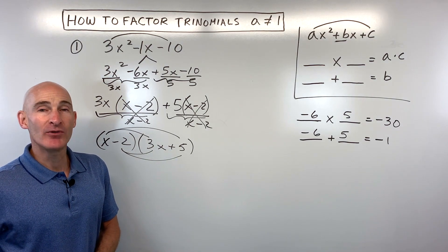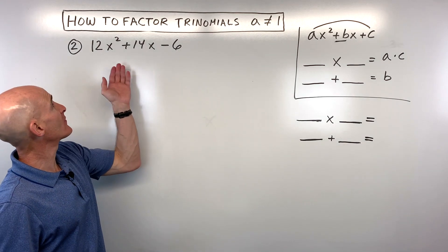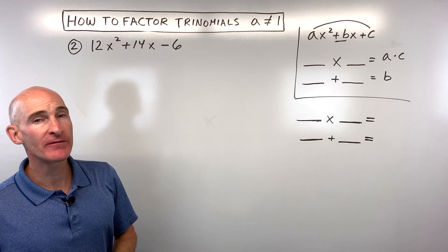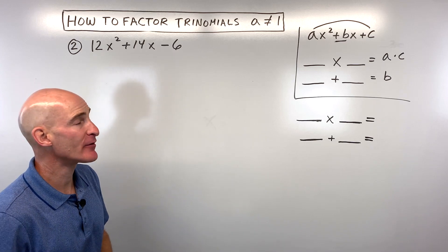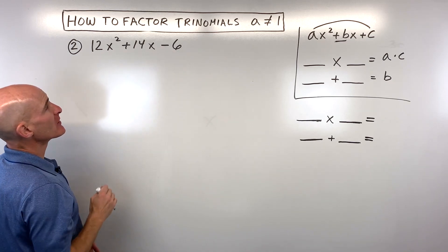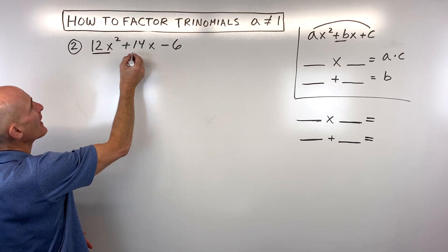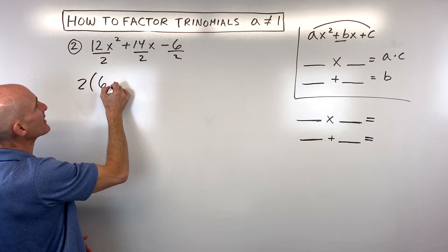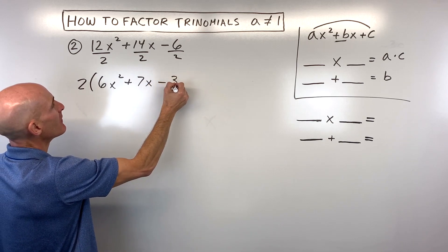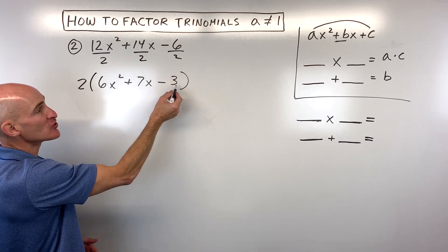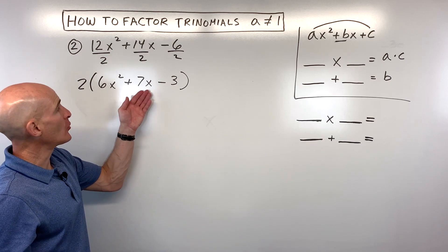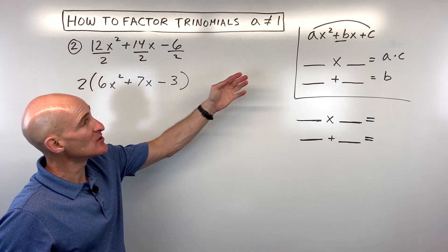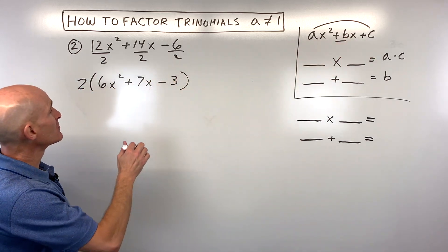Let's take a look at another example. We've got 12x squared plus 14x minus 6. Remember, the first step in factoring, if you can, is always to factor out a greatest common factor. All three terms are divisible by 2, so factoring out 2 leaves us with 6x squared plus 7x minus 3. You can check by distributing the 2 back in. We now have a trinomial with a leading coefficient that is not 1, so we use the AC method to split the middle term and factor by grouping.